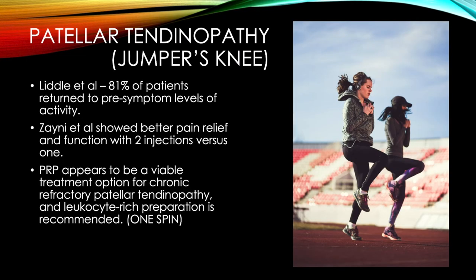For jumper's knee, two studies showed really good results. One showed 81% of patients returned to pre-symptom levels of activity, and another showed better pain relief and function with two injections versus one. Both studies used a leukocyte-rich preparation — meaning just one spin. PRP appears to be a viable treatment option for chronic jumper's knee, and you should probably do more than one injection, separated by three to six weeks.